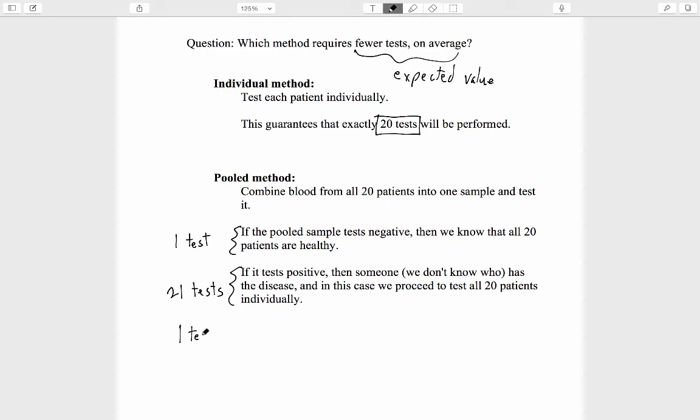So we have to compute one test times the probability of one test, but we're adding to that 21 tests weighted by its probability. So 21 tests times the probability that we will need to do 21 tests.